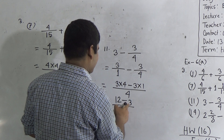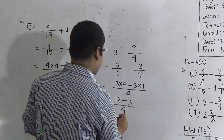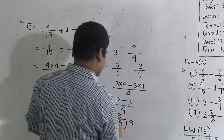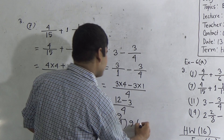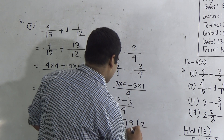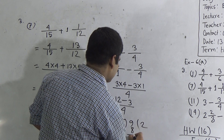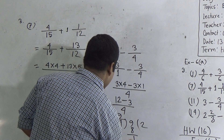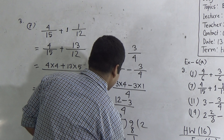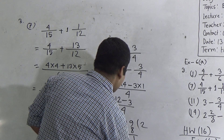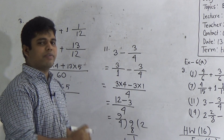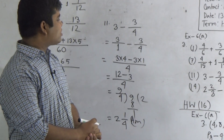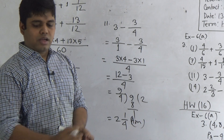Now we subtract: 3 fours are 12, minus 3 ones are 3, divided by 4. Subtracting 3 from 12 gives 9. So we have 9/4. Now we divide 9 by 4. In 9, 4 goes 2 times — giving 8 — and subtracting we get 1. So the mixed fraction is 2 and 1/4. This is the answer of question number 11. I hope you have understood how to do subtraction of two fractions.